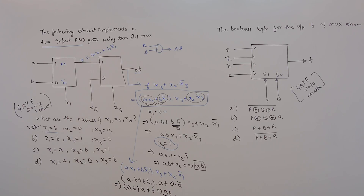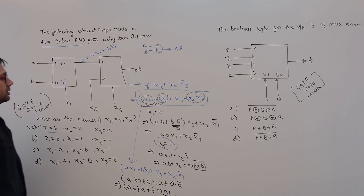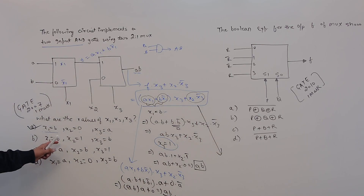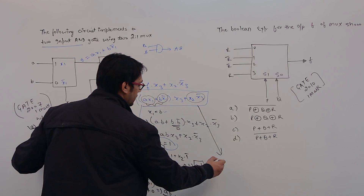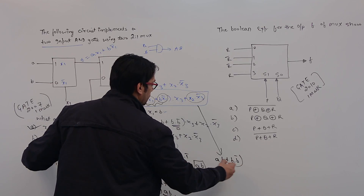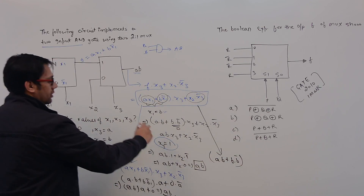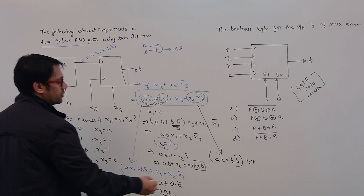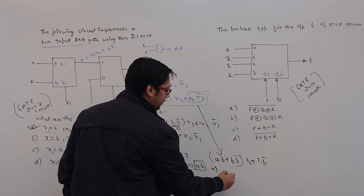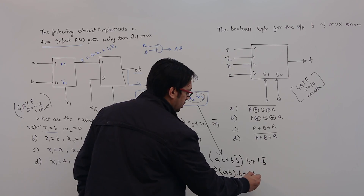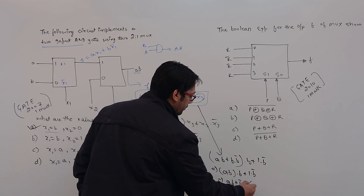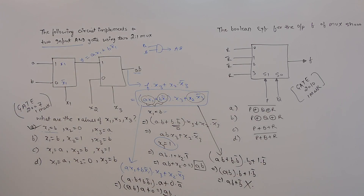Since we are sure option A is correct, we don't need to check the others, but for completeness: option B says x1=B, x2=1, x3=B. Substituting gives A·B + B·B' dotted with x3=B, then plus 1·B', which simplifies to A·B + B' — not representing A dot B. So option B is wrong. Similarly, options C and D are also wrong. Only option A is the correct answer.